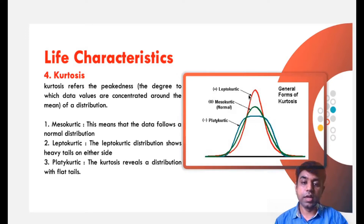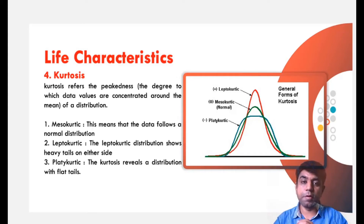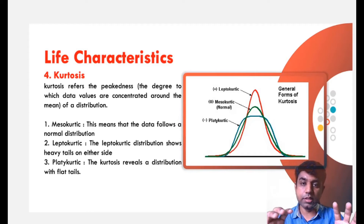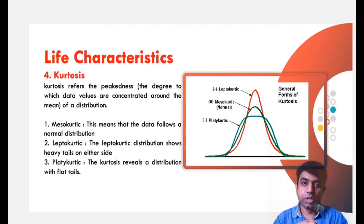If the data is concentrated in a narrow region, we call it leptokurtic — leptokurtic distribution shows heavy tails on either side. In the case of mesokurtic, it is called normal distribution, meaning the data follows normal values. In the case of platykurtic, it reveals a distribution with flat tails — the tail end is very flat, and there will be wide variations in the data. From these basic data values, we plot a curve and check how reliable the product is, taking judgment from data variations and naming them accordingly.